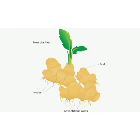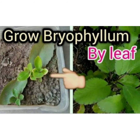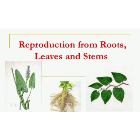Plants like hibiscus, rose and money plant can grow into a new plant with the help of stem cuttings from the mother plant. Some plants like bryophyllum have special leaves that develop buds on the leaf margins, and new plants start growing from these buds. The three methods of vegetative propagation are: from roots, from stems and from leaves.